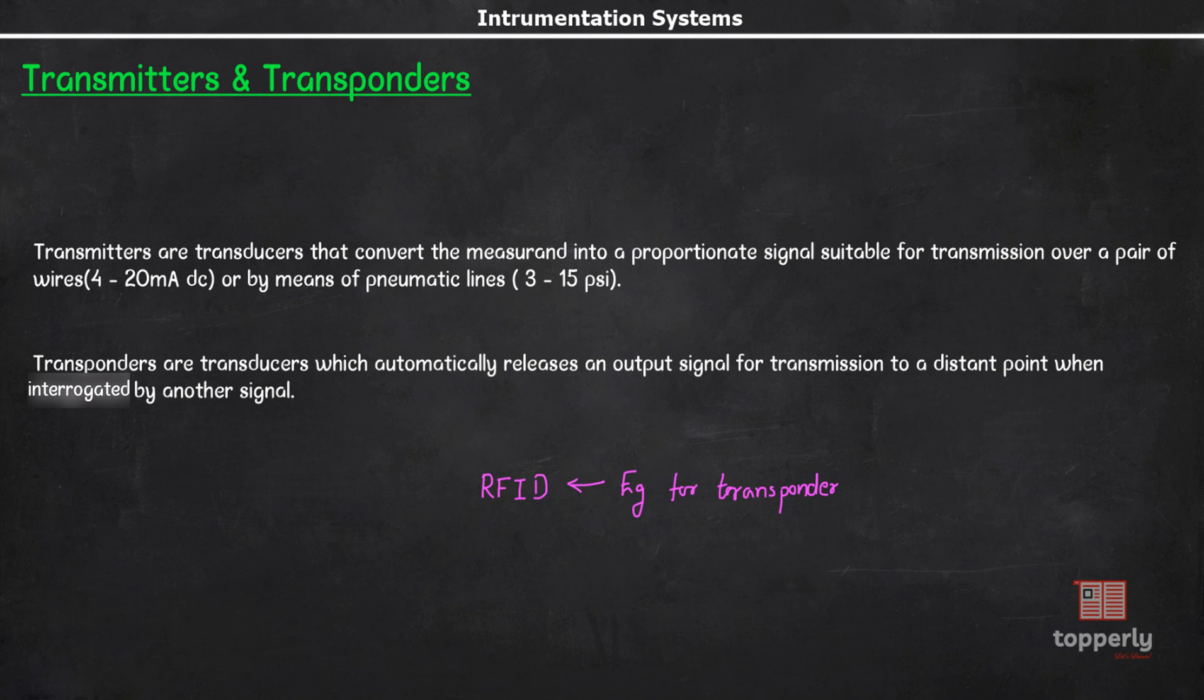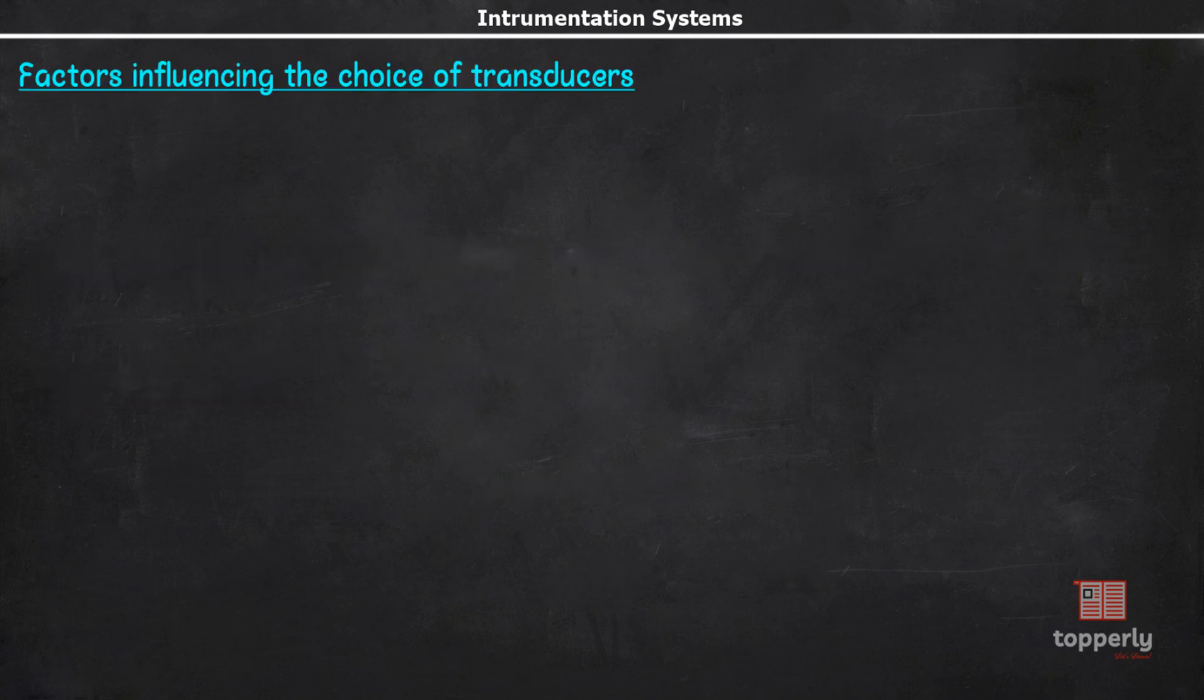Okay, now coming to our last topic. Factors influencing the choice of transducers. Whenever we are choosing a transducer for a particular application, we have to consider a number of factors into account. Firstly, operating principle. One physical quantity can be measured by several types of transducers. We choose the one with operating principle which best suits our application. For example, if we want a high speed current sensor, we would choose a Hall effect transducer rather than an ordinary ammeter.